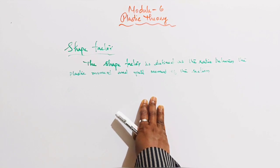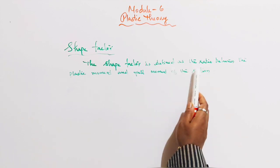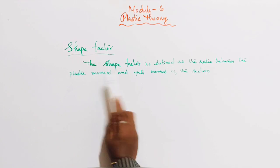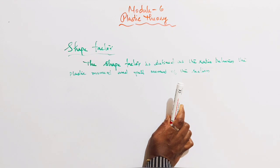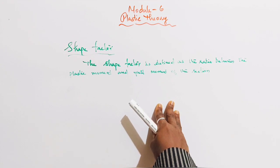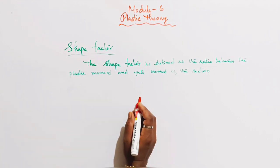Shape factor of the cross-section of a beam is defined as the ratio between the plastic moment and the yield moment of that section. So, the shape factor is the ratio between the plastic moment and the yield moment of the section.